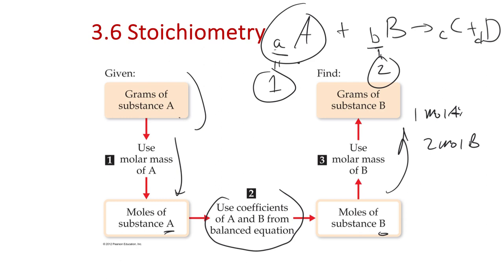Let's start with hydrogen and nitrogen reacting to form ammonia. Balancing: we need 2 NH₃ on the product side to balance the two N atoms, which gives 6 hydrogens, so 3H₂. The balanced reaction is 3H₂ + N₂ → 2NH₃. When doing a stoichiometry problem, we must balance the reaction first — we're going to need those coefficients.